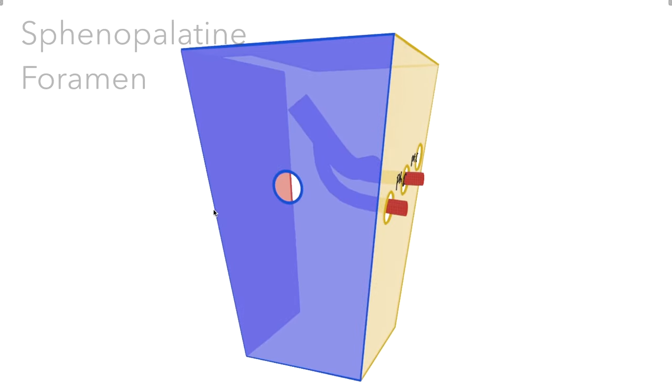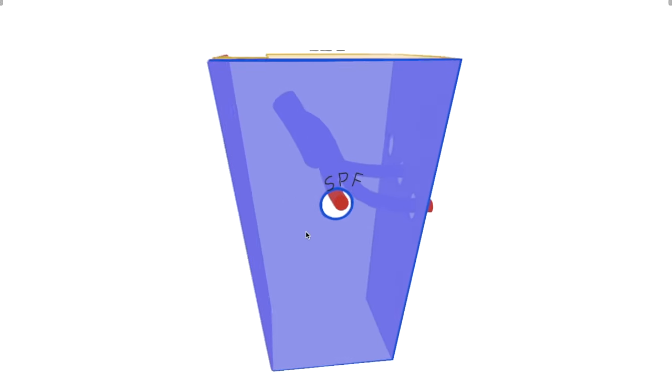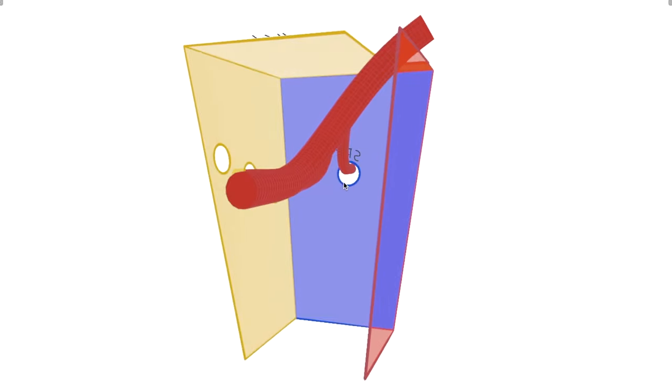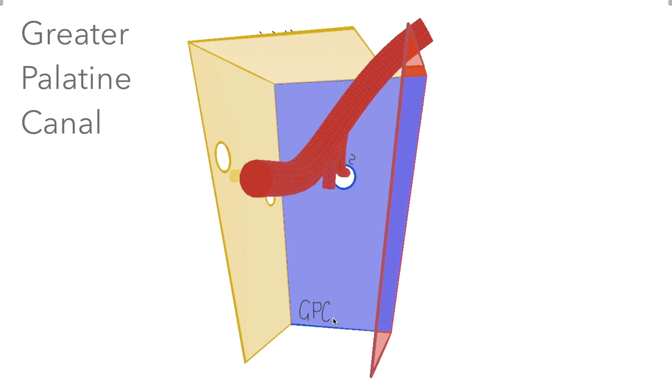Through the sphenopalatine foramen passes the sphenopalatine artery. And through the inferior orbital fissure goes the infraorbital artery. Lastly, through the greater palatine canal, the descending palatine artery.